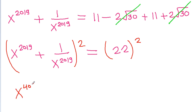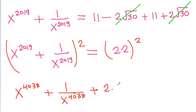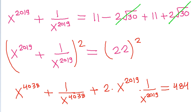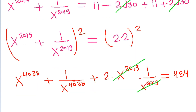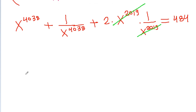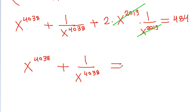Squaring x to the power 2019 minus 1 by x to the power 2019, we get 22 squared which is 484. Therefore x to the power 4038 minus 1 by x to the power 4038 is equal to 484 minus 2, which equals 482.